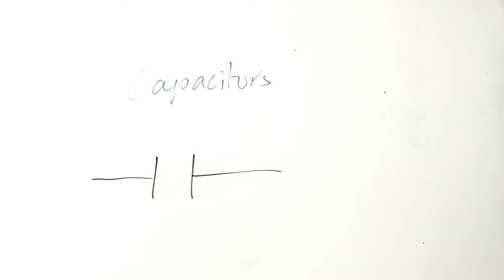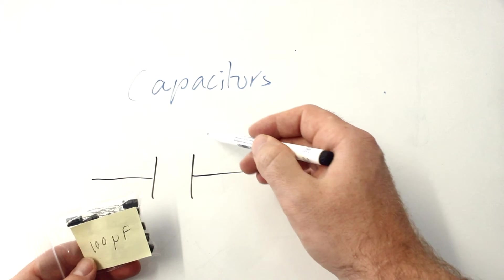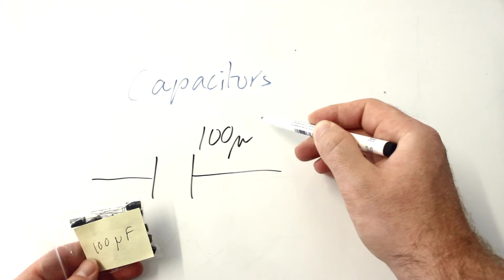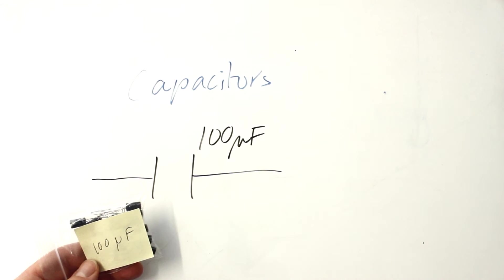Drawn like that. Again, you can write on what value they have. These are 100 micro-farad capacitors. So we just do something like that in a circuit diagram.